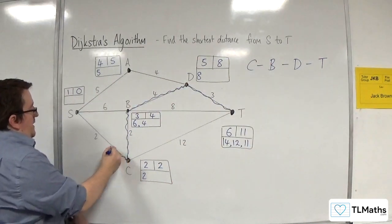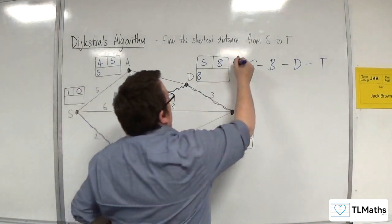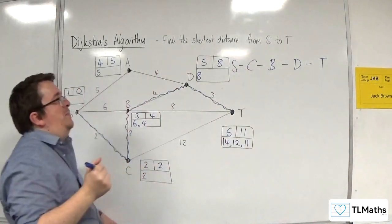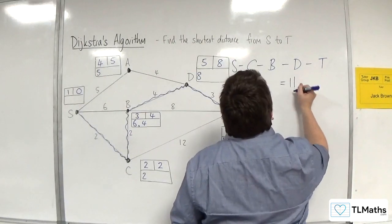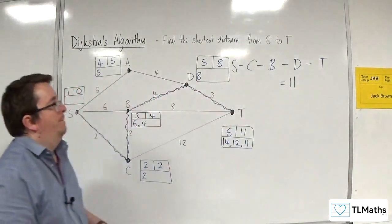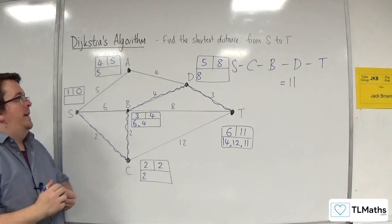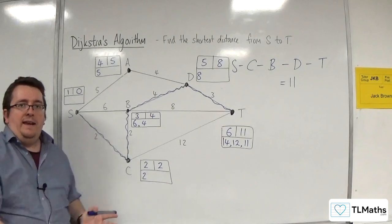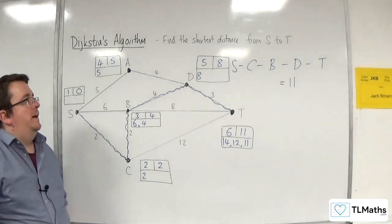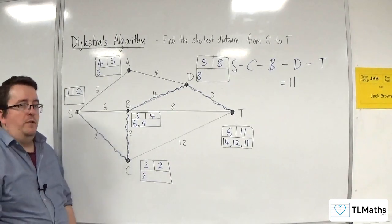And then clearly back to S. So S, C, B, D, T is the route, and that is of length 11. So that is how we can find the shortest distance from one point to another in a network using Dijkstra's algorithm and also find the route through. Thank you.